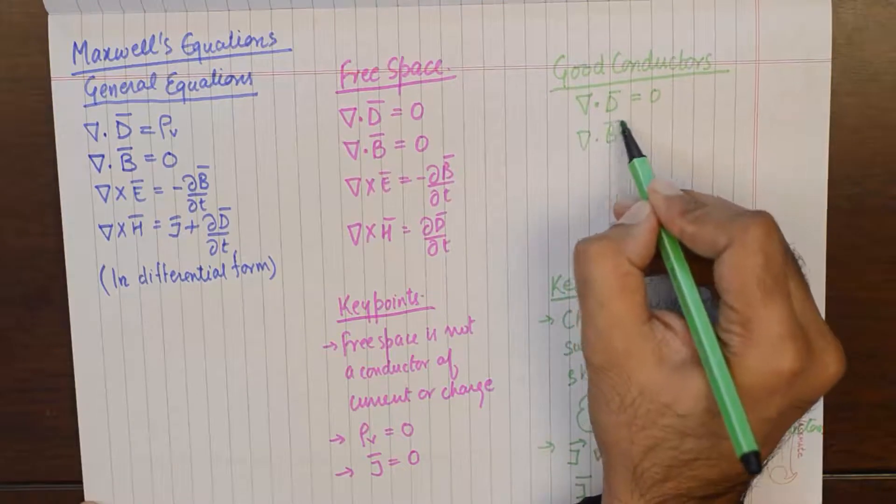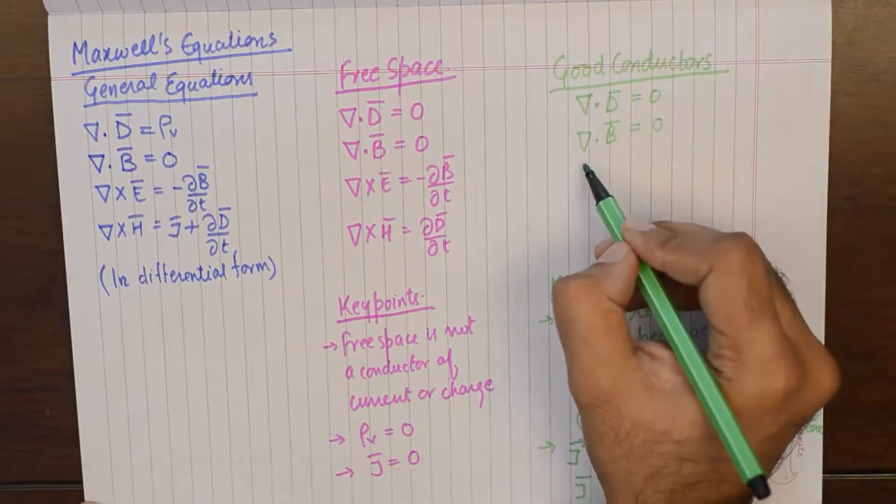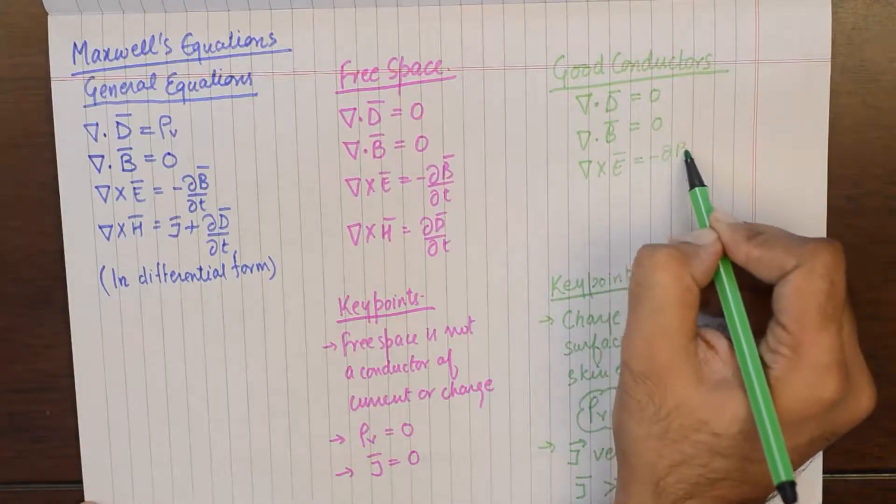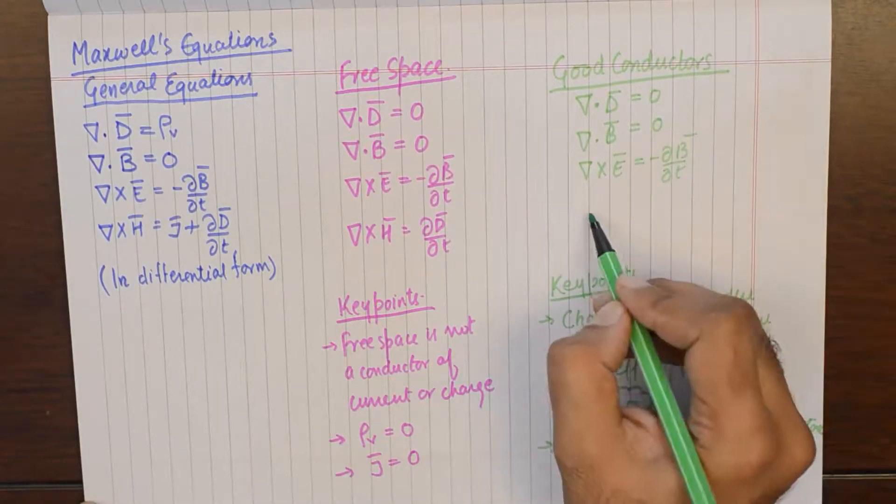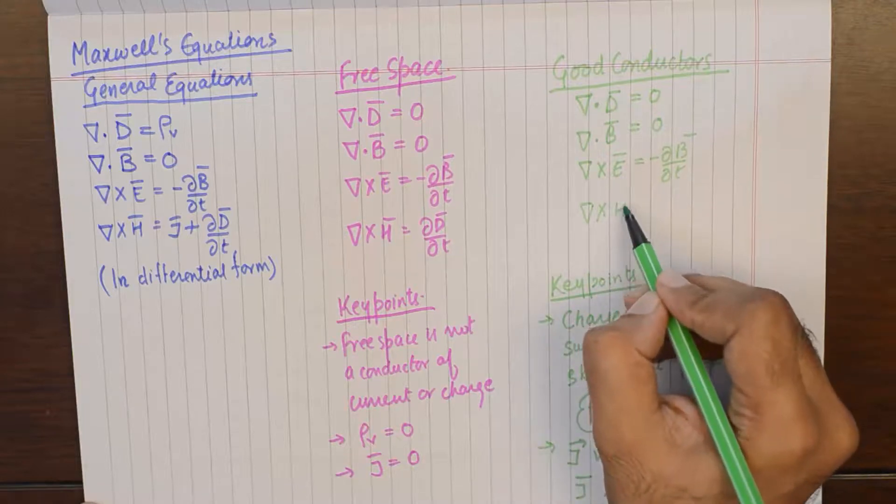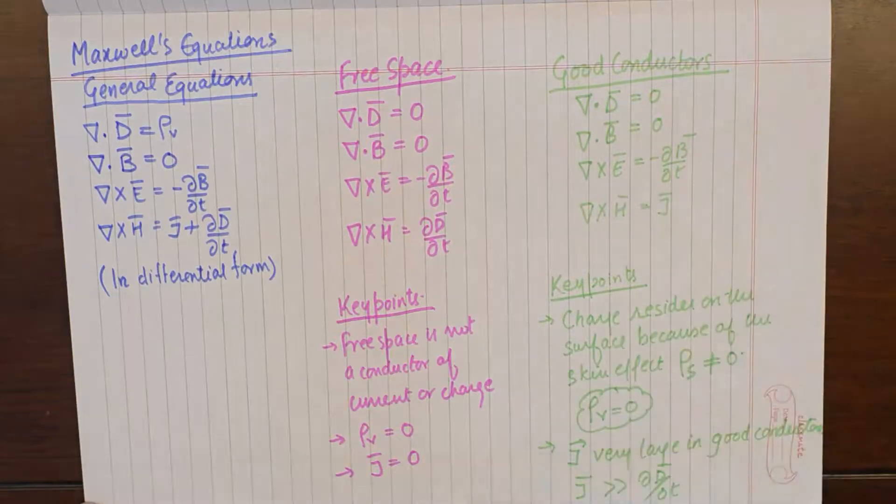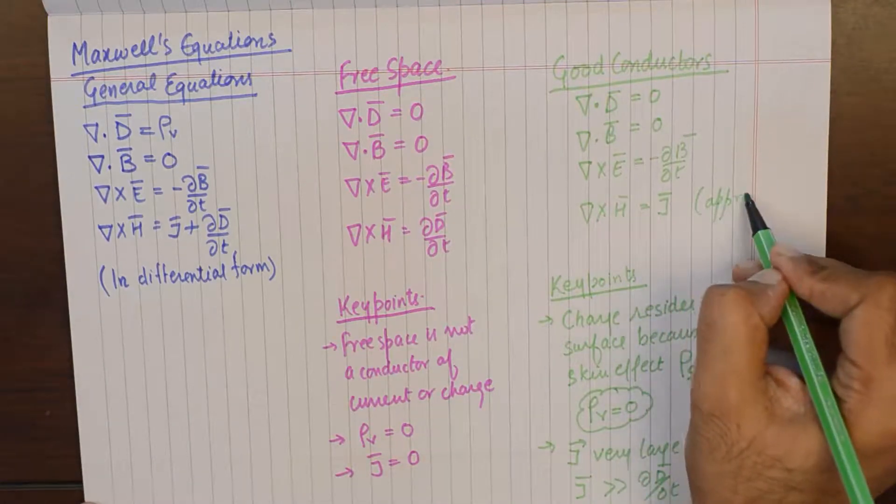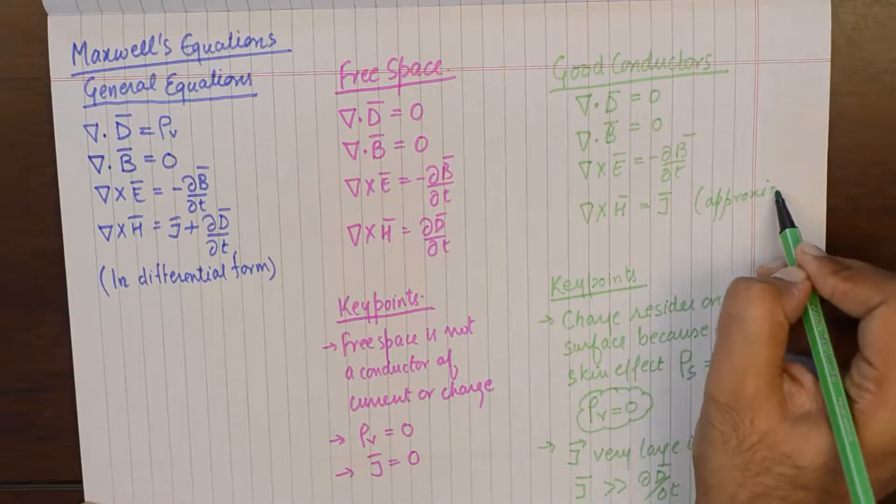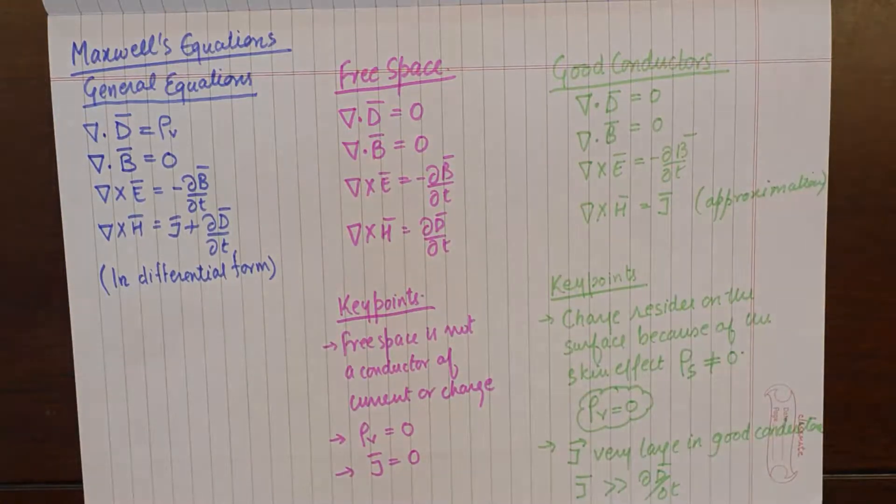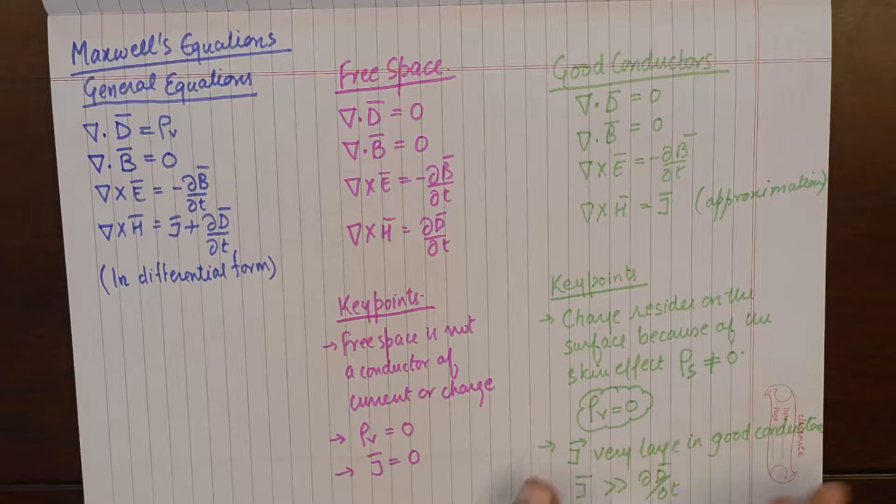Divergence of B is zero anyway. And this stays the same. And this becomes just equivalent to J. This is, please understand, this is just an approximation, but this approximation is extremely accurate in many cases.